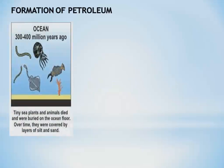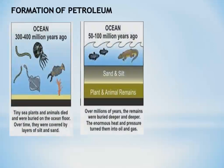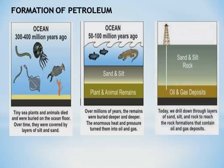Recap — Formation of petroleum: Tiny sea plants and animals died and were buried on the ocean floor. Over time, they were covered by layers of silt and sand. Over millions of years, the remains were buried deeper and deeper. The enormous heat, pressure, and absence of air turned them into oil and gas.